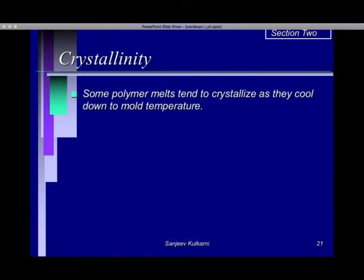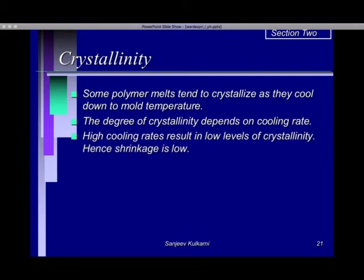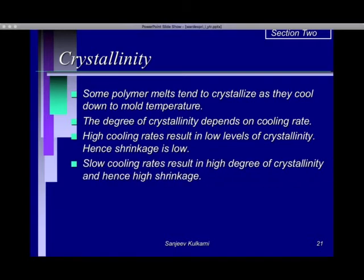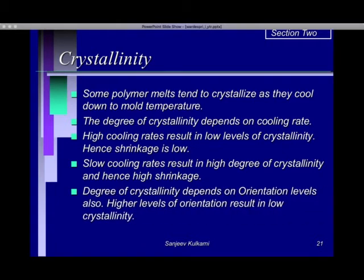The next factor is crystallinity. Some polymer melts tend to crystallize as they cool down to solid state. The degree of crystallinity depends on cooling rate — the faster the cooling rate, the lower the levels of crystallinity and hence the lower the shrinkage. Slow cooling rates result in a higher degree of crystallinity and hence higher shrinkage. The degree of crystallinity also depends on orientation levels — higher levels of orientation result in lower crystallinity. If polymer molecules inside the mold are oriented in a specific direction, it will result in lower levels of crystallinity and hence less shrinkage.